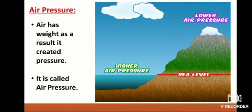Air Pressure: Air has weight, and as a result it creates pressure, which is called air pressure. There is greater air pressure near the surface of the Earth, and it decreases with increasing height. This is called vertical air pressure.